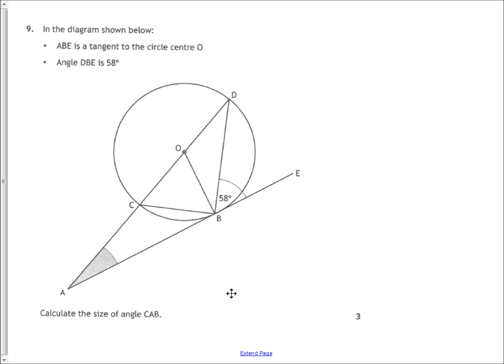Question 9. Calculate the size of angle CAB. So that's shaded for you. So no excuses for not knowing which angle it is. Key word, ABE is a tangent. So this line here is going to be a tangent to the circle. So that means that where it meets its radius, that's going to be a 90 degree angle. So this will be as well. So we're going to work at this angle because we know that 58 and something else have to add up to make 90. So that's going to be 32.